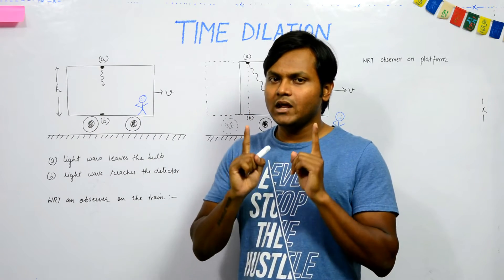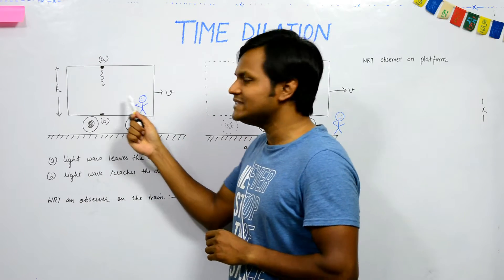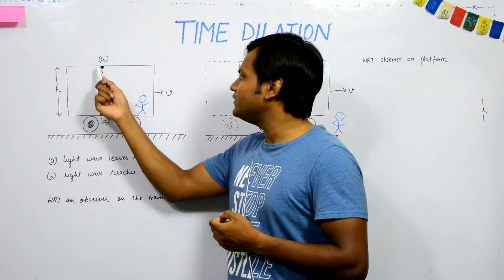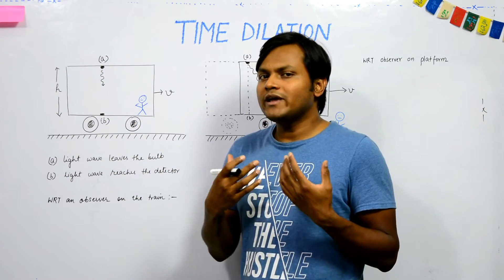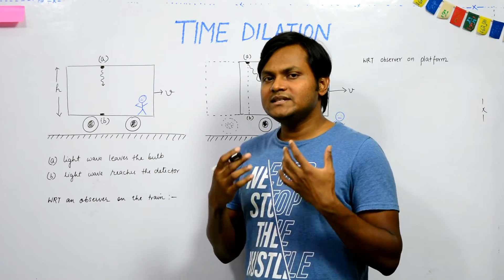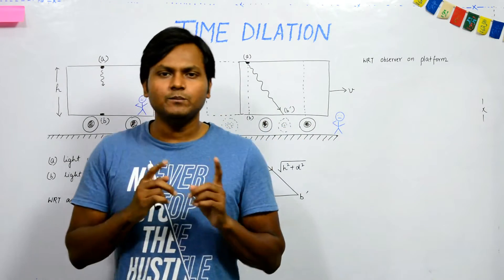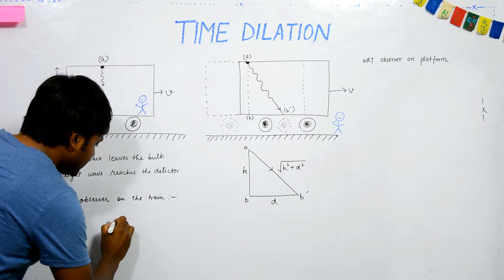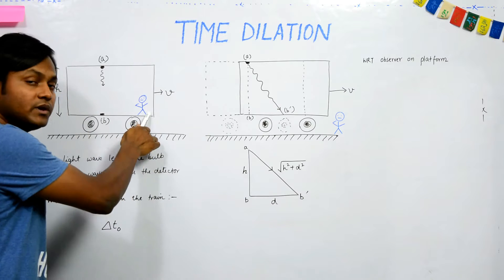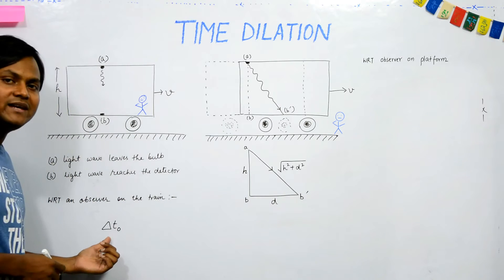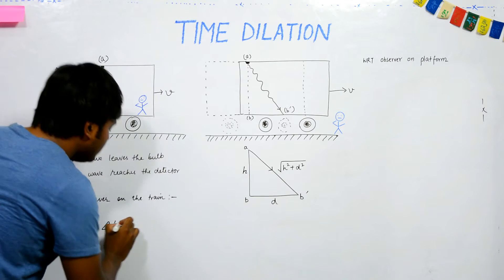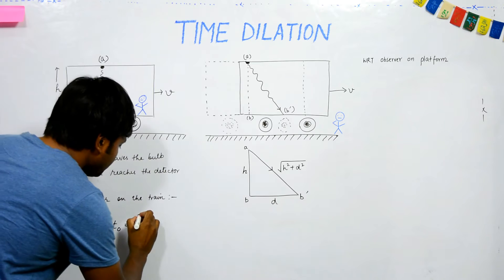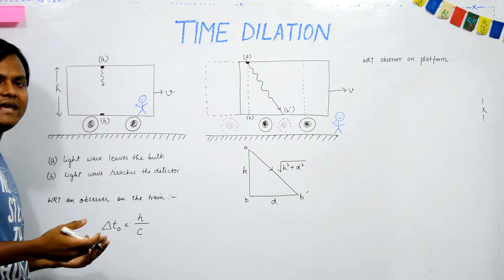Let's define an observer inside the train. For this observer, the entire setup of the bulb and the detector is at rest. So the time period for light to go from point A to point B is simply distance divided by speed. The time period measured by this person inside the train is represented by ΔT₀, equal to the height of the train H divided by the speed of light C.